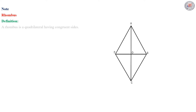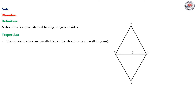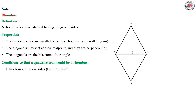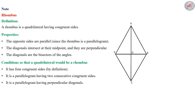Before we continue with part 3, let's take a note concerning the rhombus. By definition, a rhombus is a quadrilateral having congruent or equal sides. The properties of a rhombus are: the opposite sides are parallel since the rhombus is a parallelogram; the diagonals intersect at their midpoint and they are perpendicular; and the diagonals are the bisectors of the angles. The conditions for a quadrilateral to be a rhombus: first, it has four congruent sides; second, it is a parallelogram having two consecutive congruent sides; third, it is a parallelogram having perpendicular diagonals.